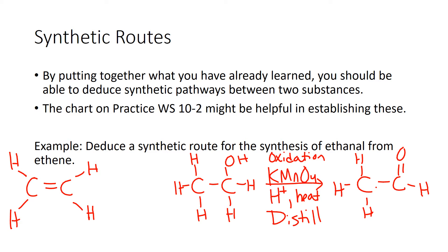If we wanted to produce the carboxylic acid, we'd need to continually react it under reflux. So then I have to ask myself: how could I get from ethene to ethanol? Basically I'm going from an alkene to a substituted alkane, so that must be an addition reaction. I'm adding water here in the presence of acid, and that will give me ethanol.